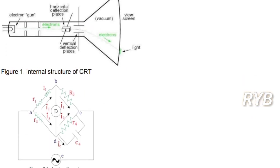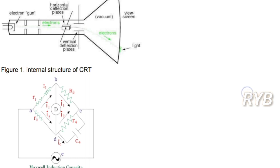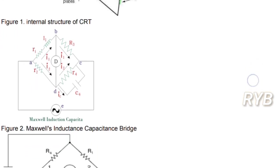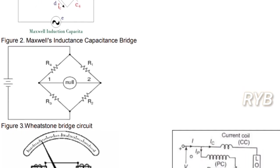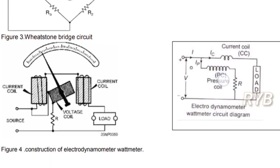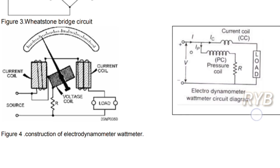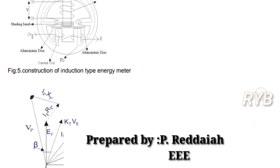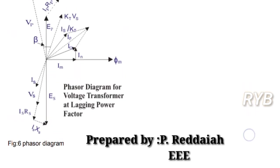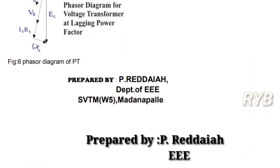Here is the CRT diagram: electrons are liberated from the electron gun, moving through horizontal and vertical deflection plates, touching the fluorescent screen where they bombard it and produce a luminous glow. This is the Maxwell's inductance-capacitance bridge with R4 and C4 connected in parallel. This is the Wheatstone bridge. This is the electrodynamometer wattmeter — the fixed coil is divided into two parts to give more uniform flux. These diagrams are important; drawing more diagrams helps you get more marks easily.